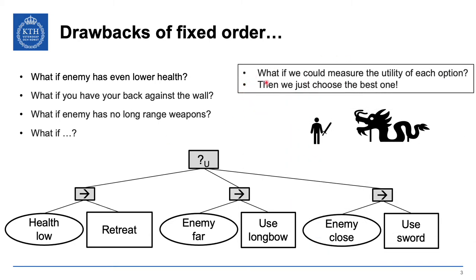What if we could measure the utility of each option — in a given situation, how useful is retreating, using the longbow, or using the sword — and then just choose the best option? This is a good idea, though it can hide complexity. If we can measure the utility of all options, the optimal choice is simply to do the most useful thing — but the whole problem is hidden under defining what 'utility' actually means.